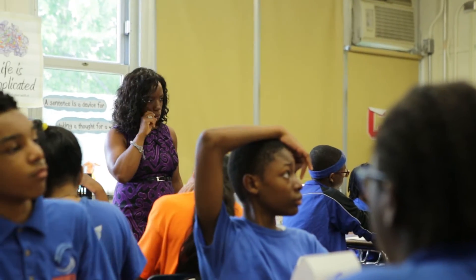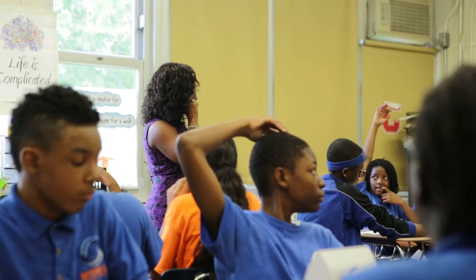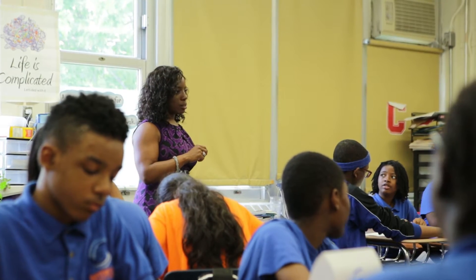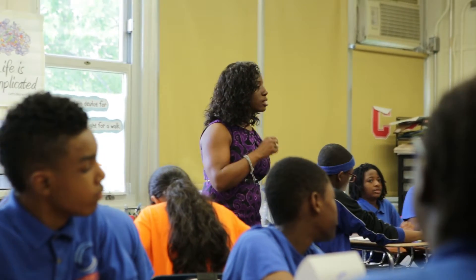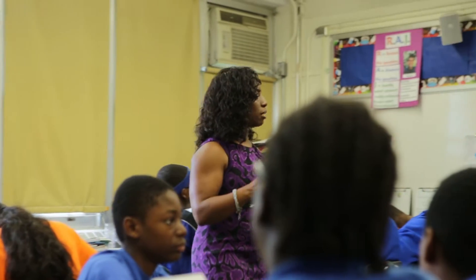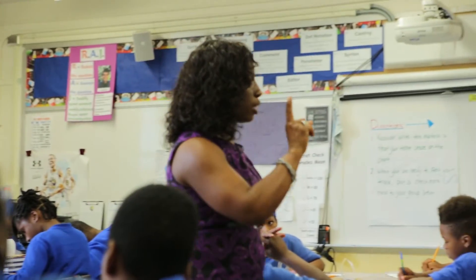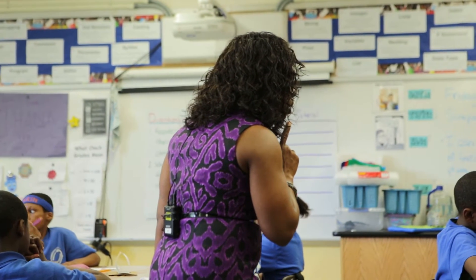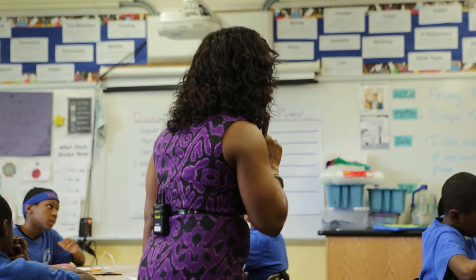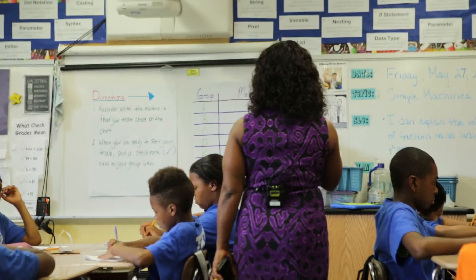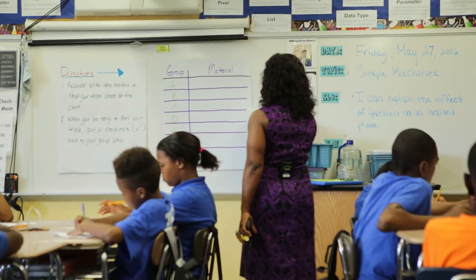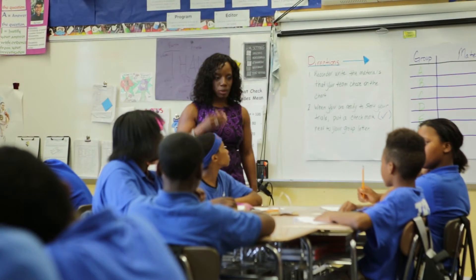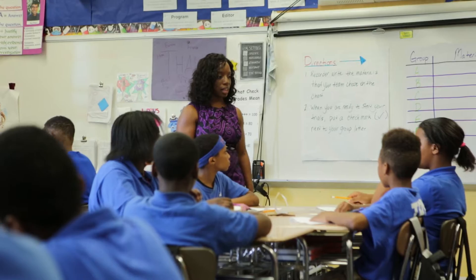What is a control? Brittany said that a control is something that stays the same. So you're changing only one thing in your experiment, and that is the covering. We're only changing the covering. Therefore, everything else in our experiment has to stay the same. So you are going to figure out with your team what is that list of things that has to stay the same.